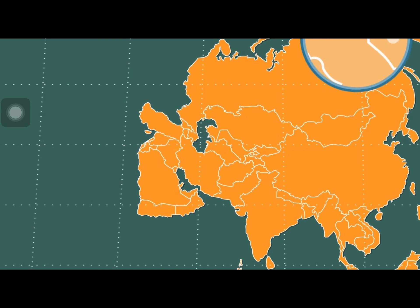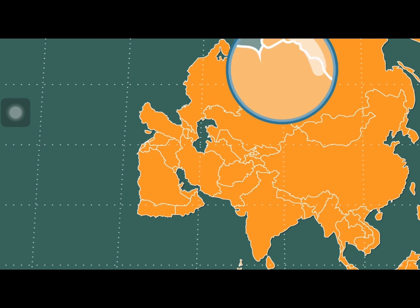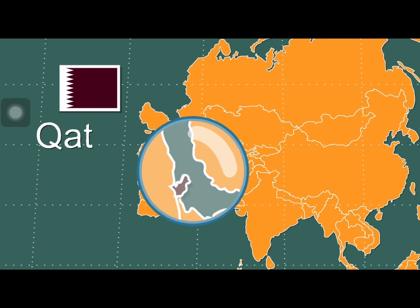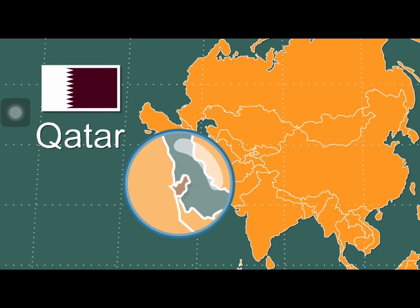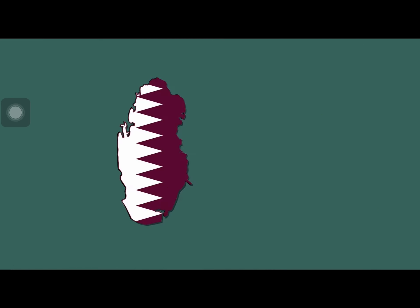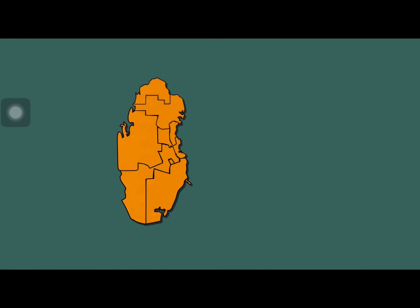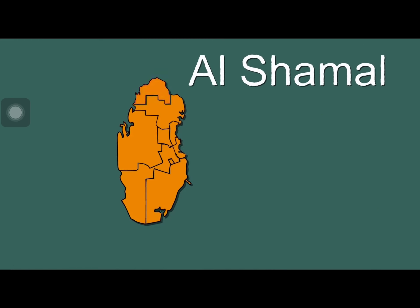You would have to travel far to reach the country of Qatar, within the continent of Asia, in the Persian Gulf you see. Now let's learn the names of our eight municipalities.